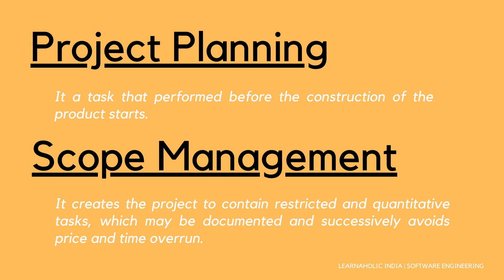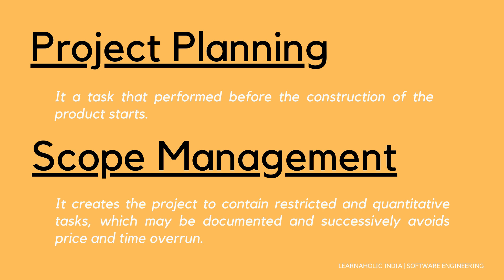The first activity is Project Planning. It is a set of multiple processes, a task that is performed before the construction of the product starts. The next one is Scope Management. Scope Management describes the scope of the project — it clearly defines what would be done and what would not. It creates the project to contain restricted and quantitative tasks, which may be documented and successively avoids cost and time overrun.